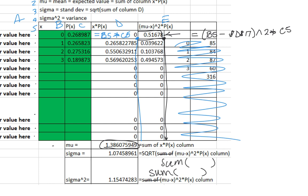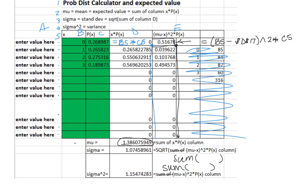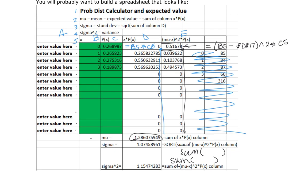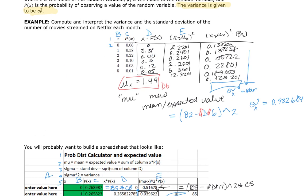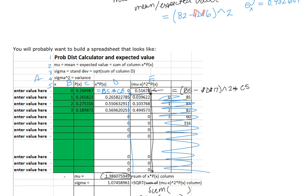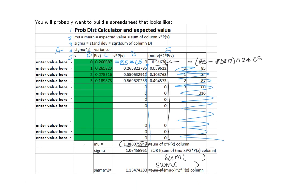And so this is your expected value of a probability distribution. You can add the (x minus mu)² column separately if you want, or do it all at once like I did. That's it for this video — we'll see you in class.